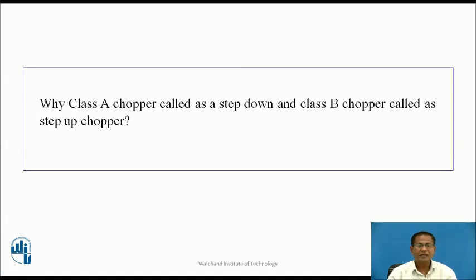Why is Class A chopper called a step-down chopper and Class B chopper called a step-up chopper? For Class A, the output voltage is less than the input — that is why Class A is called a step-down chopper. In Class B, the output is greater than the input — that is why it is called a step-up chopper.